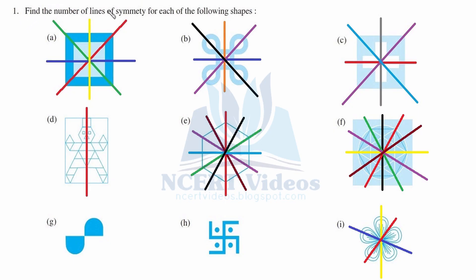Question one: find the number of lines of symmetry for each of the following shapes. A line of symmetry is something where if you place a mirror on it, you get the opposite figure. For part A, we have one, two, three, four lines of symmetry.